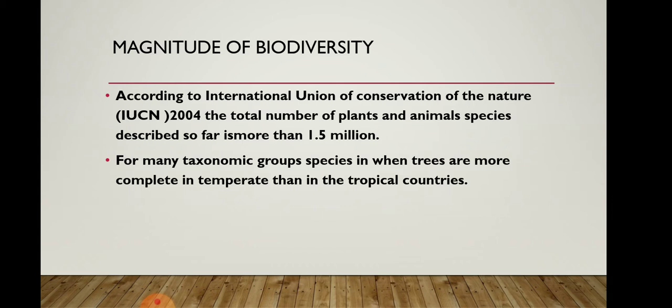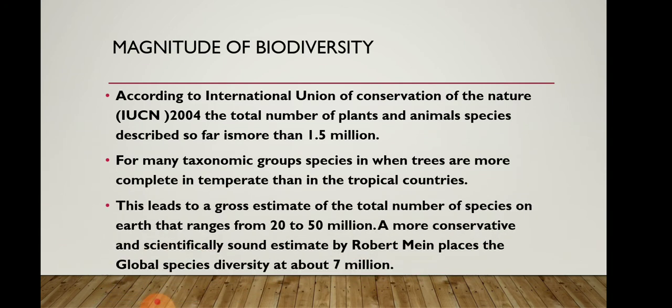This leads to a gross estimate of the total number of species on Earth. The estimated total number of species ranges from 20 to 50 million — so up to 50 million species may be present on Earth's surface. A more conservative and scientifically sound estimate by Robert May places global species diversity at about 7 million.